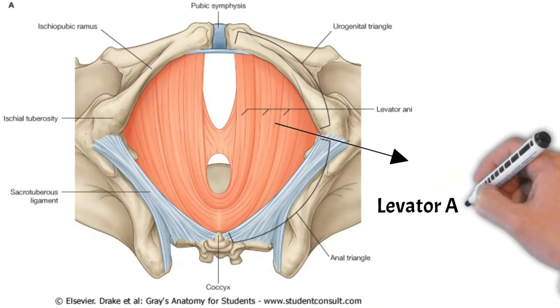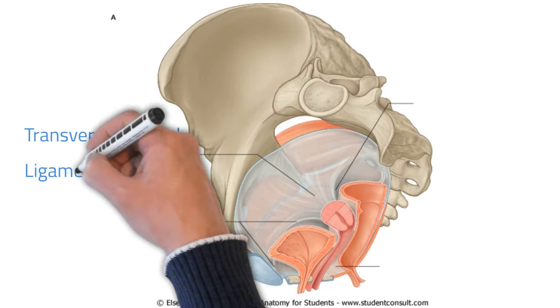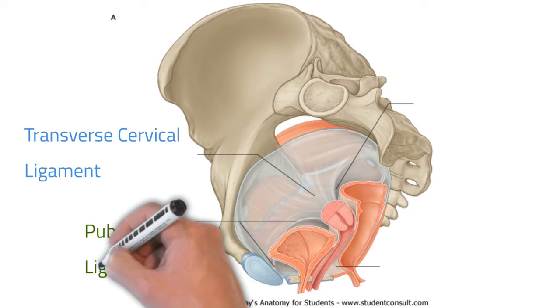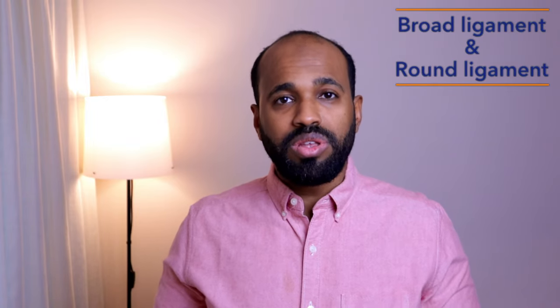The uterus is supported by the levator ani muscle and by the condensation of pelvic fascia attached to the cervix, which forms three important ligaments: the transverse cervical ligament (cardinal ligament), the pubocervical ligament, and the sacrocervical ligament. In addition, the uterus receives extra support from the peritoneal fold called the broad ligament and the round ligament, which is a remnant of the embryonic gubernaculum. These are lax structures and are clinically considered to play a minor role in uterine support.